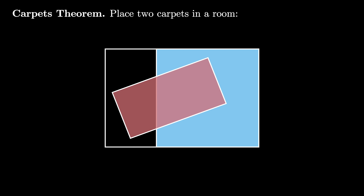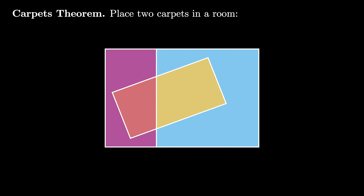then the room is cut up into four different regions. The regions are: the region covered only by the first carpet, which we call x; the region overlapped by both carpets, called y; the uncovered region w; and the region only covered by carpet 2, which we call z. Therefore, the area of the room using this labeling is x plus y plus w plus z.